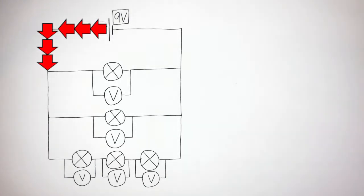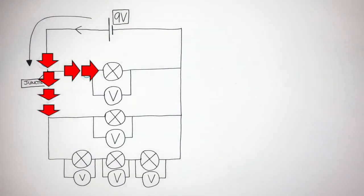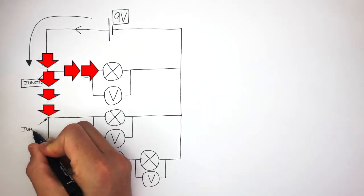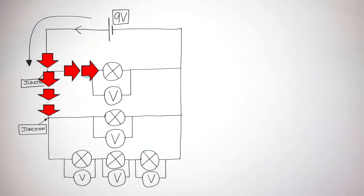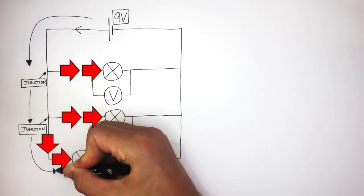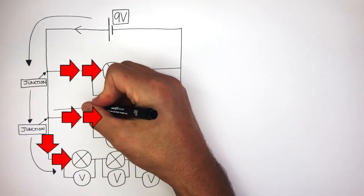Conventional current goes from positive to negative. Current flows through the metal wire. When the electric current arrives at the junction, it is forced to split — part flows through one branch and the rest continues down the next branch. This electric current continues to flow where it meets another junction, forcing the current to split again, so part flows down one branch and the rest flows down the other.